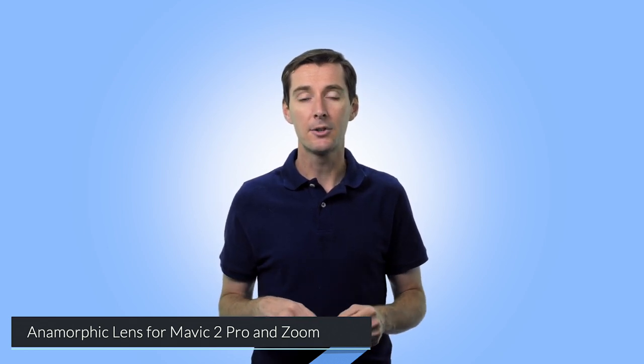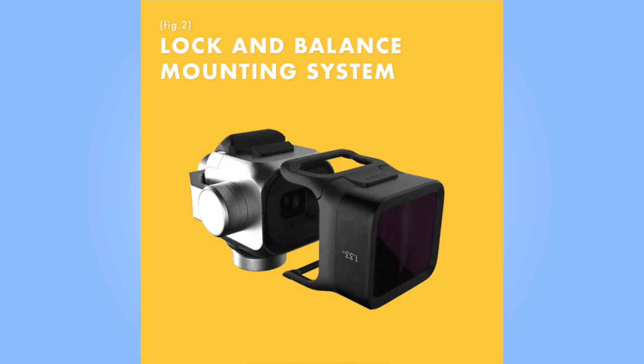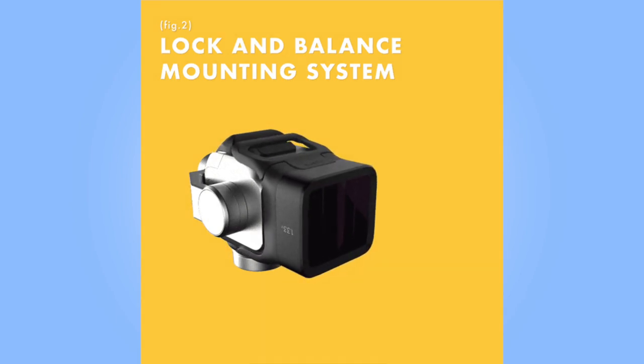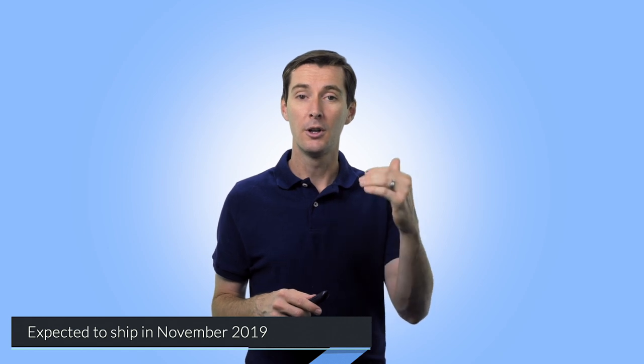This company is called Moment Air, and they're creating an anamorphic lens for the Mavic 2 Pro and Mavic 2 Zoom. These will be available on Kickstarter. You can go on Kickstarter and buy it right now for $199 instead of $299 when the campaign is over. This cover weighs about 50 grams and clips around the gimbal. It's expected to ship in November 2019. They've already met the goal for funding. I got one and I'll be reviewing it as soon as I get it. I think it's going to provide a different look and make your footage a little bit better.